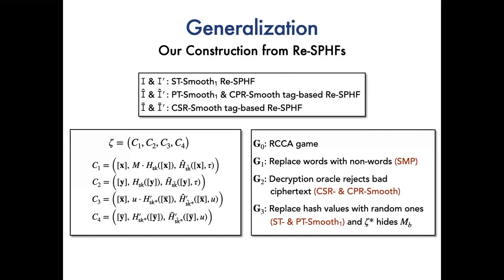Similar to the security justification of Cramer-Shoup paradigm, we provide the argument to justify the RCCA security of our variants. Let game 0 be the RCCA security game. In game 1, due to the hardness of subset membership problems, we replace all the language elements in challenge ciphertext zeta star with non-language elements. In game 2, by the CSR and CPR smooth, the decryption oracle also rejects all the bad ciphertext. That is, the oracle would not reveal more information about the secret key.